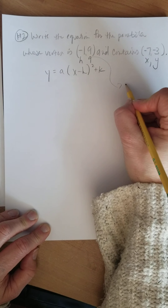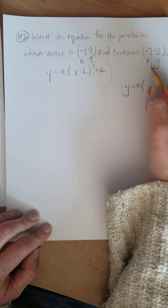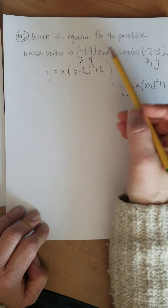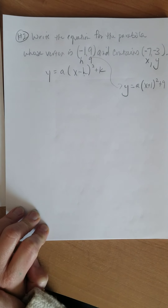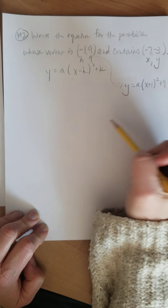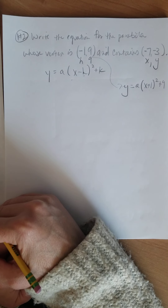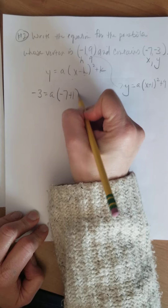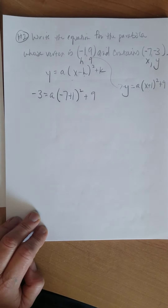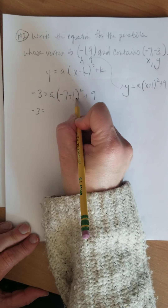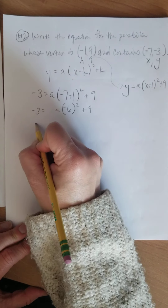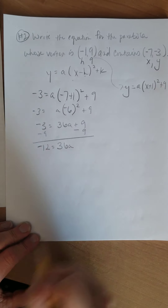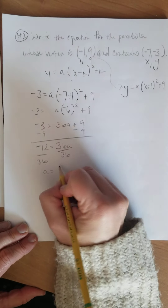Substituting: negative three equals a times (negative seven minus negative one) squared plus nine. Negative seven plus one is negative six, squared gives 36a plus nine. So negative three equals 36a plus nine. Subtract nine to get negative twelve equals 36a. Divide by 36: a equals negative twelve over thirty-six, which is negative one-third.